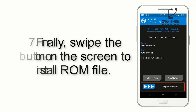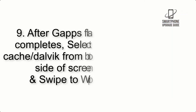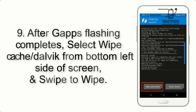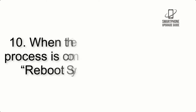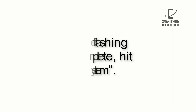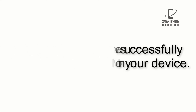Step 7: Swipe the button on the screen to install the ROM file. Step 8: Flash the GApps zip package in the same manner. Step 9: After GApps flashing completes, select Wipe Cache and Dalvik from the bottom left side of the screen and swipe to wipe. Step 10: When the flashing process is complete, hit Reboot System. That's it — you have successfully installed the ROM on your device.